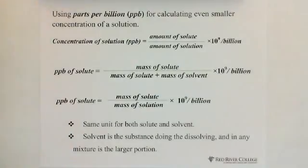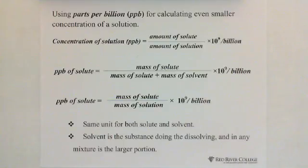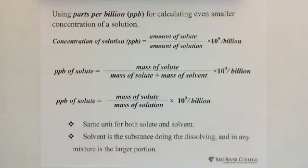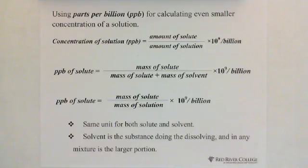Using parts per billion, which is PPB, for calculating even smaller concentrations of a solution. The PPB is even smaller than PPM. PPB is parts per billion. The concentration of a solution in PPB equals the amount of solute over amount of solution, multiplied by 10 to the 9th exponent per billion.